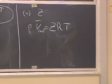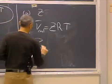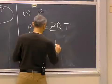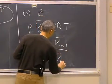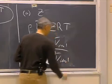Z is the compressibility factor. And Z is the ratio of the volume of the real gas divided by what it would be were it an ideal gas.